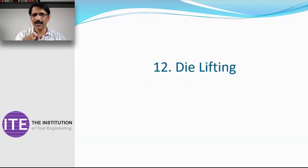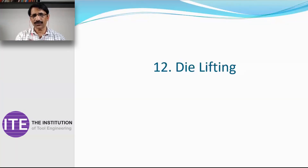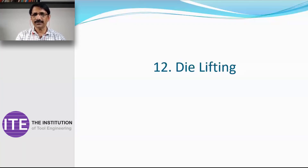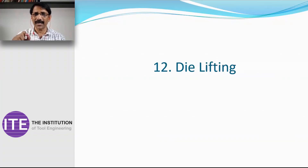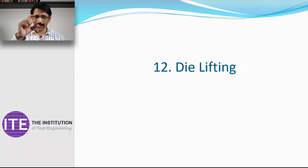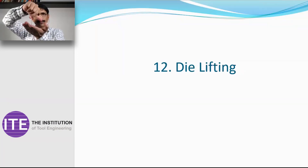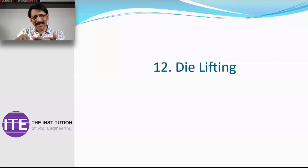Regarding die lifting, proper lifting arrangement is critical because in most companies, accidents happen due to failure of the eye bolt, which is used for lifting. Reasons include: the bolt material is not proper — generally a high tensile bolt with proper hardness is required — or the thread engagement is not proper. Proper engagement means how deep the screw is fitted; that thread engagement must be correct.